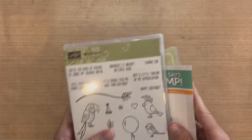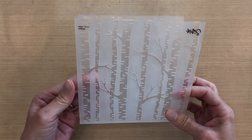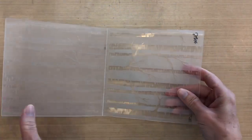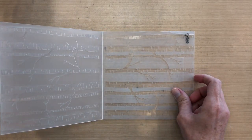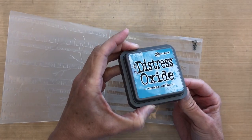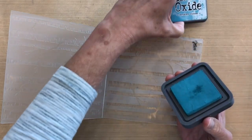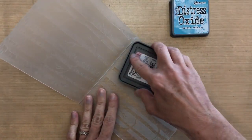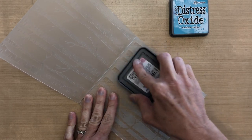I'm going to ink up my embossing folder. I want to ink up the background, which is the raised portion on the side that has the Sizzix label on it.